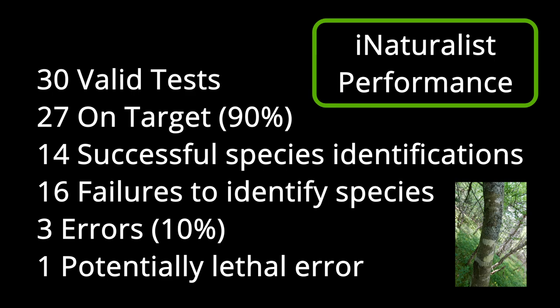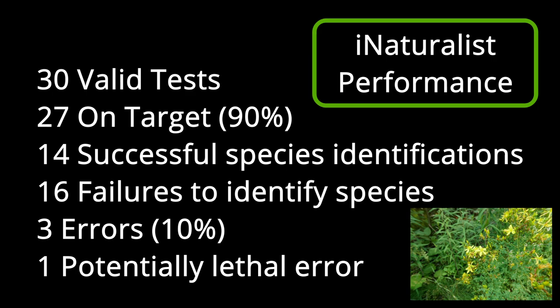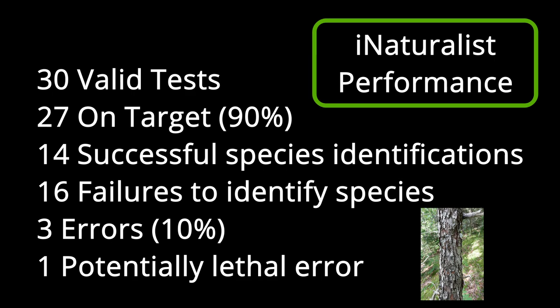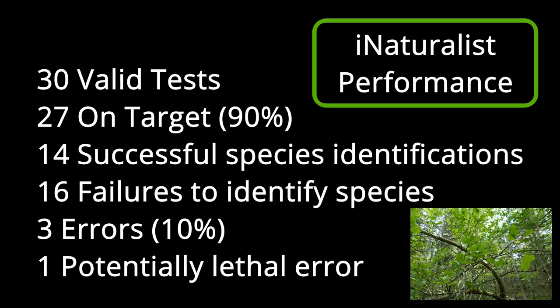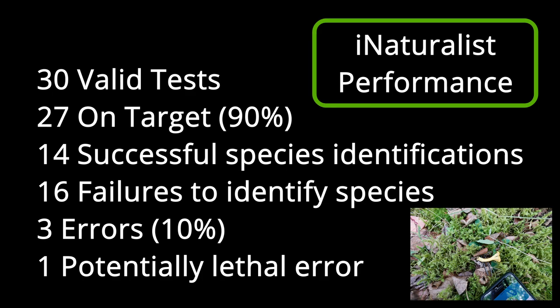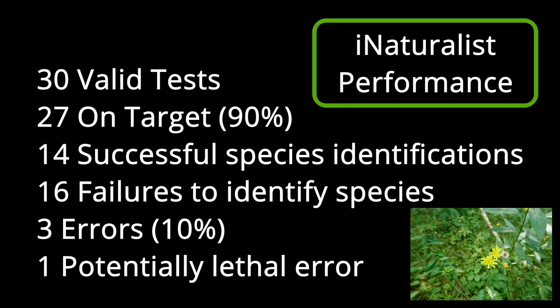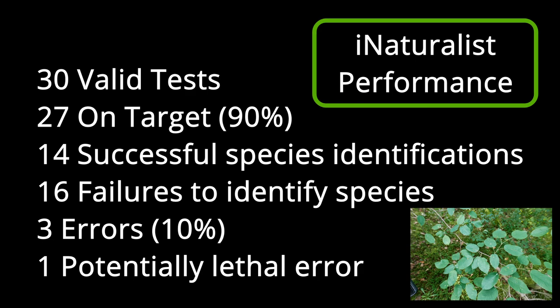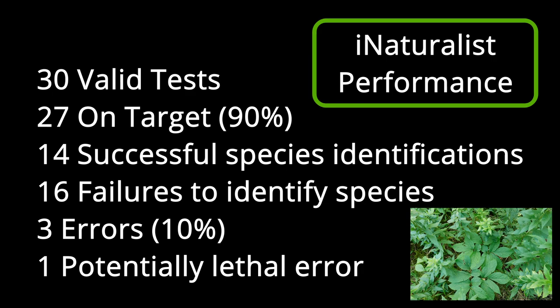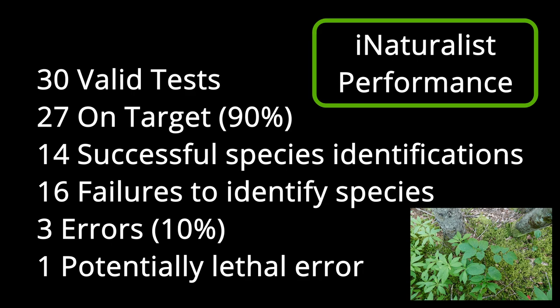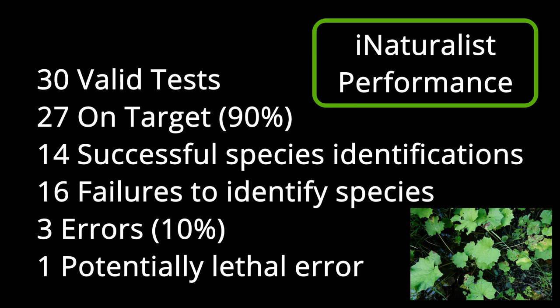There were 30 valid tests. Of the 30 tests, 27 were on target, which would seem fairly impressive — it means the application is about 90% correct. But when we look deeper, we begin to see problems: it only managed 14 successful species identifications. Thus, there were 16 failures to identify down to species, crucial for foragers, meaning they cannot rely on applications like iNaturalist to make identifications for them — they must go back and confirm those identifications for themselves. The application made very few outright errors, 3 out of 30. But for a forager, 3 out of 30 errors is not acceptable. A forager would not want 1 in 10 things they harvest to possess some degree of toxicity. And one of the failures to identify down to species, as well as one of the errors, were extremely concerning.